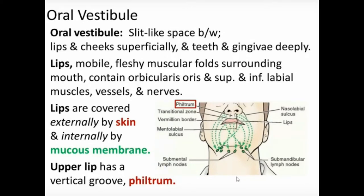The lips are mobile, fleshy muscular folds. The muscles of the lips are formed by the orbicularis oris — the circular muscle — and the remaining muscles which either elevate or depress the lips. These constitute the mass of the lips, which are covered inside by the mucous membrane and outside by the skin.